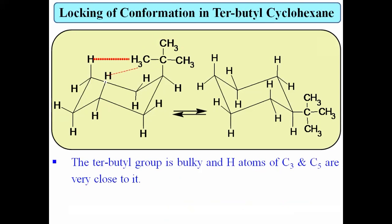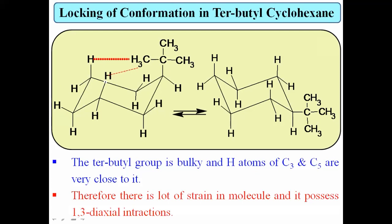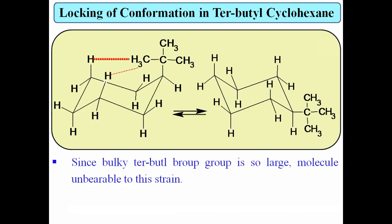The tertiary butyl group is bulky and large, so when the tertiary butyl group and hydrogen atoms of C3 and C5 are very close to each other, there is a significant 1,3-diaxial interaction. Hence that axial isomer is highly unstable — it is unbearable to this strain. The tertiary butyl group is so large that the molecule cannot tolerate this strain, and it will resist the flipping of the molecule.